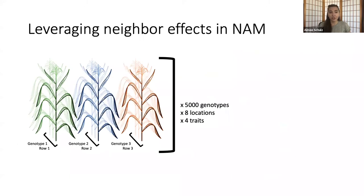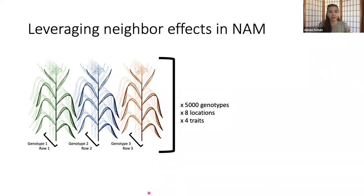Neighboring rows have been known to impact the phenotype of a particular row being measured, which is why historically four-row plots are very commonly used in the field when trying to get an accurate estimate of yield within a yield trial. In order to better understand the importance of different traits and growth strategies, the maize NAM population was grown with a unique genotype in each row, giving the ability to look directly at 5,000 genotypes across eight locations and evaluate neighbor effects for four different traits.